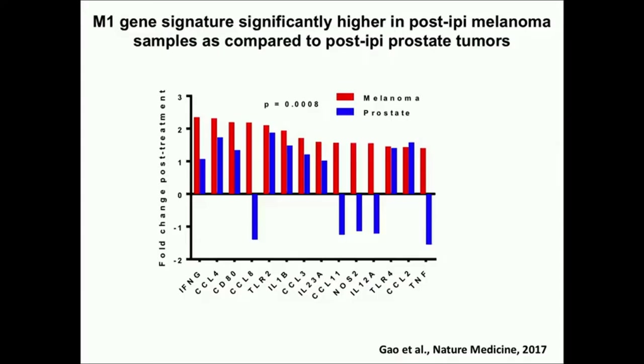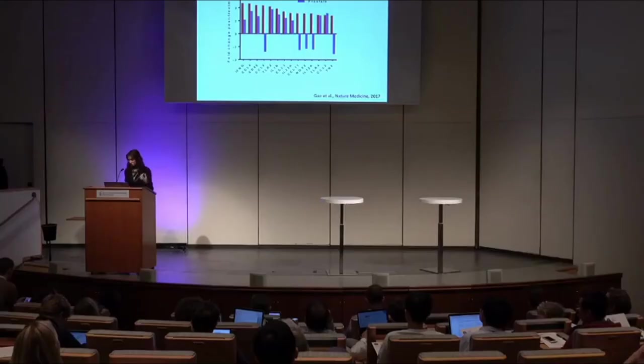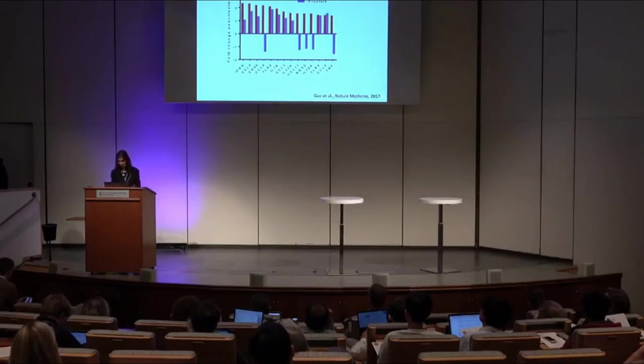We're not only running the CyTOF and co-localization experiments with multiplex IF — we're also doing gene expression analysis and validation in model systems. In the gene expression studies, the M1 gene signature, which is a signature for macrophages that help with tumor rejection, is much higher in the melanoma patients treated with anti-CTLA4 compared to prostate cancer patients given the same treatment, where you see more of the M2 signature — the gene signature that goes along with tumor progression — indicating this difference in the tumor microenvironment with VISTA-positive cells.